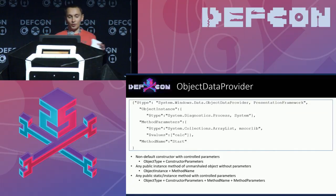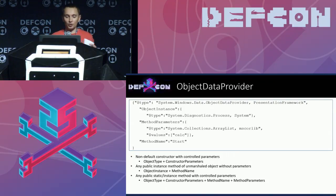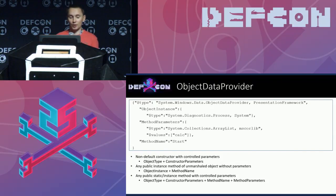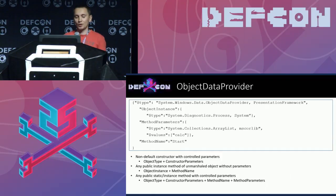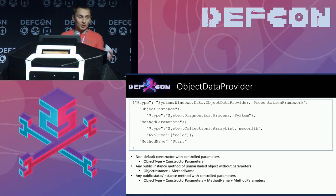Here we see an example of a JSON payload that will pop up a calculator for an unsafe configuration of JSON.NET parser. This gadget allows the following main attack vectors: calling a non-default constructor with controlled arguments, invoking a public method on an unmarshalled object, or calling any public method including static ones with our own parameters.